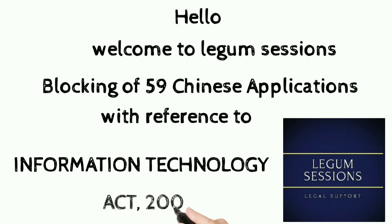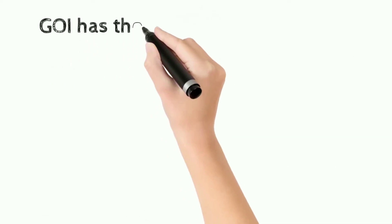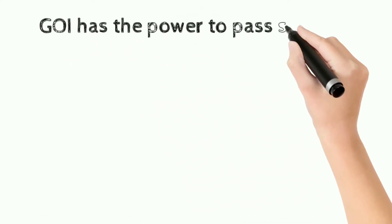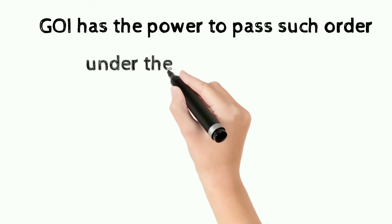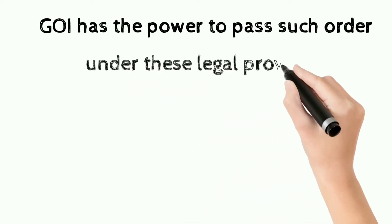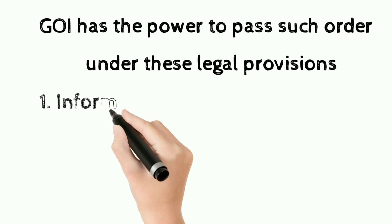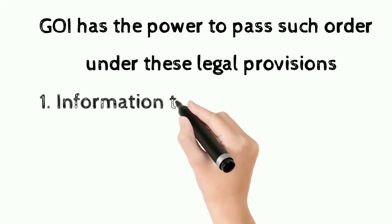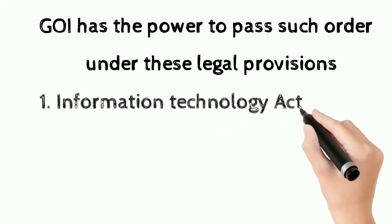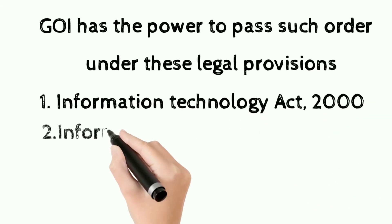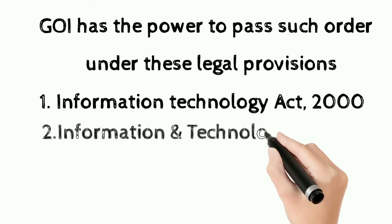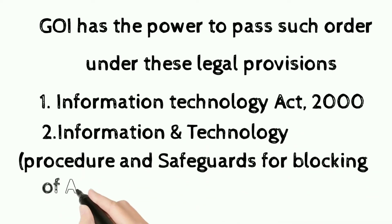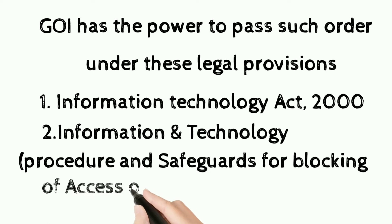Here we will basically discuss as to from where the government of India, or the Ministry of Electronics and Information Technology, has referred to its powers to pass such kind of orders. We will take into consideration the Information Technology Act of 2000, along with the Information Technology Procedure and Safeguards for Blocking of Access of Information by Public Rules of 2009.